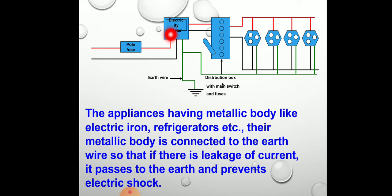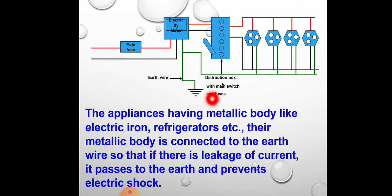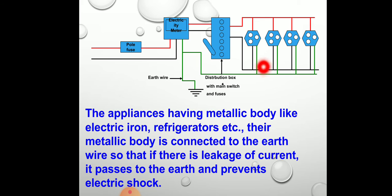From the pole fuse, it is connected to the electric meter. The live and neutral wire come from the pole fuse, and at our house the earthing is done — the earth wire from the electric meter is buried inside the earth. This earth wire is then connected to the upper socket pin. It is connected to the metal cases of electric devices. The live and neutral pass through the distribution box with the main switch and fuse, and each circuit has a different fuse.